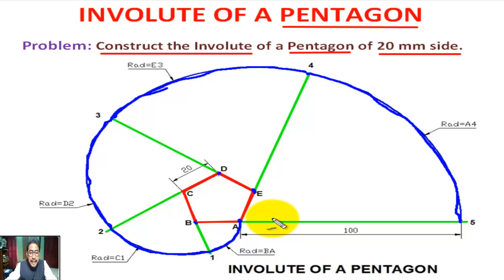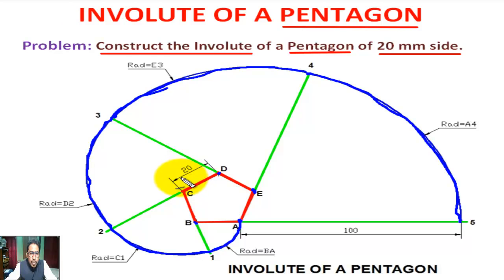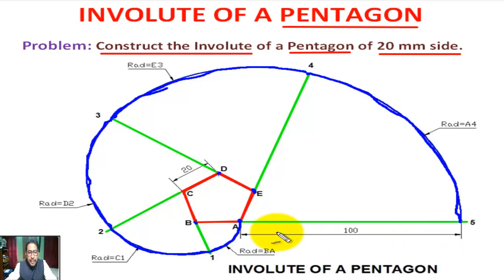The curve A-1-2-3-4-5 is the required involute of the pentagon. As we draw the entire curve with a compass it will be a smooth involute curve. Since AB equals BC equals CD equals DE equals EA equals 20 millimeters, the total length A5 will be 100 millimeters. Thank you.